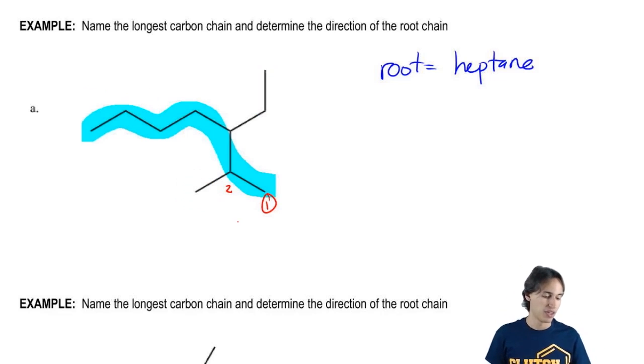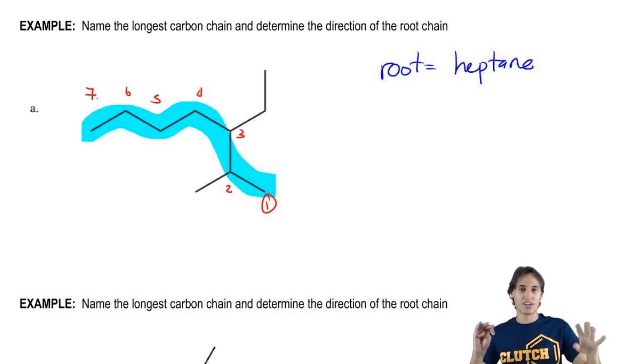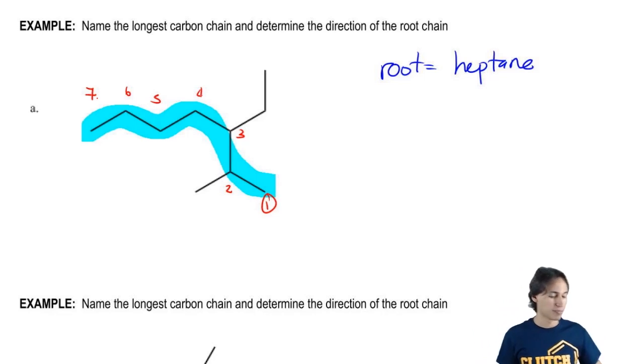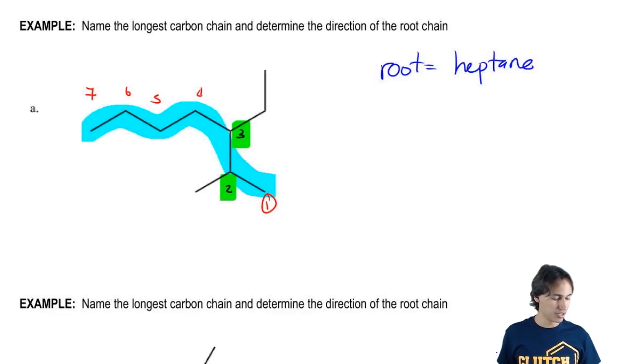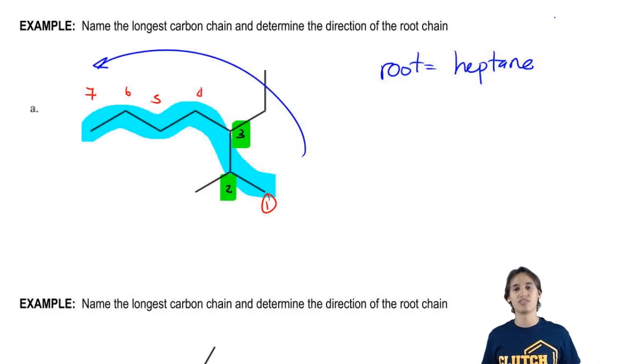And what that means is that this is going to be one, two, three, four, five, six, seven. Later on when I have to name this molecule, which we're not going to do yet, we're not there yet. But later on when you have to name this, this is going to help me because now I'm going to have substituents at the two and at the three. And that is way better than having substituents at the five and at the six, which would have been the blue direction. Does that make sense? So the direction was this way and that is the end of the question.